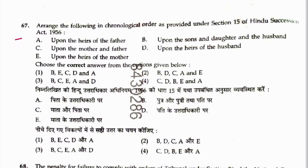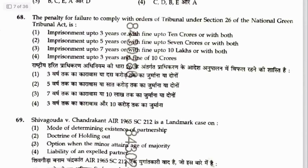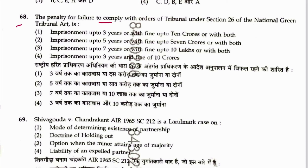Question 67: Arrange in chronological order as provided under Section 15 of Hindu Succession Act regarding heirs of female property. First goes to sons, daughters, and husband. Then heirs of husband. Then mother and father. If mother is not there, then heirs of father. If no heirs of father, then heirs of mother. Sequence is B, D, A. Answer is 2.